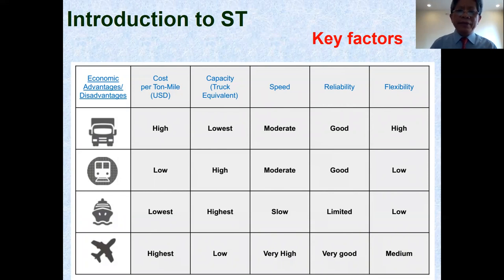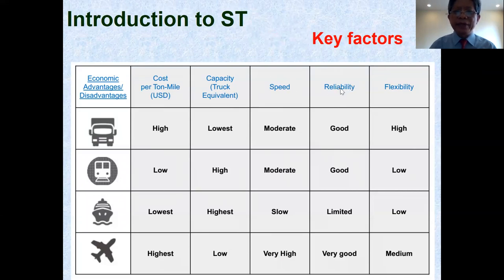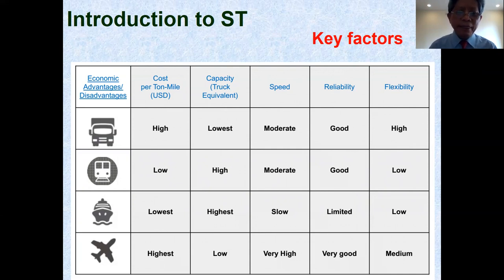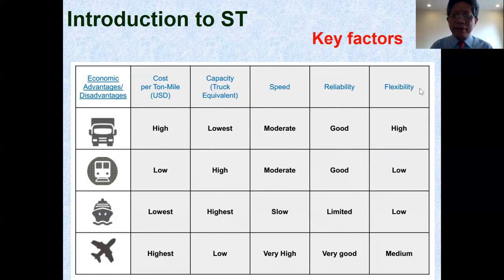This table shows the key factors for different kinds of traffic means, including plane, ship, locomotive, and truck, for different factors including cost, capacity, speed, reliability, and flexibility. From the table you can see that different kinds of traffic means have different degrees of these key factors. For example, for the ship, they have lower cost but higher capacity, while their speed is low, their reliability is limited, and their flexibility is also low.